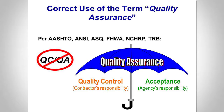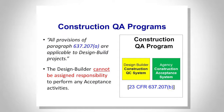Again, pointing out in construction, the same issues apply. Quality assurance is the umbrella; contractor quality control covers the product. Notice that the design builder cannot be assigned responsibility to perform any acceptance activities. You can use the contractor's information as part of your acceptance, but the contractor cannot make the acceptance determination.